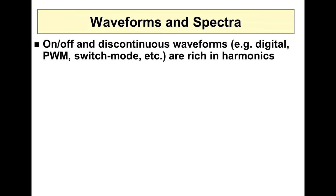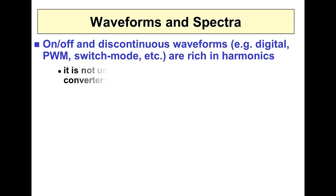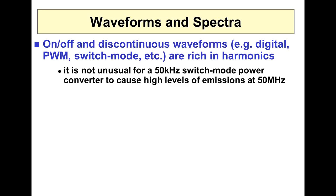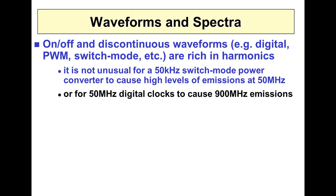When you do EMC, it helps if you get used to thinking of things as seen on an oscilloscope and also on a spectrum analyzer at the same time. Swapping between domains helps you understand what's going on. These days we're using an awful lot of discontinuous waveforms — like digital waveforms, switch mode power converters, and pulse width modulation. These waveforms, when analyzed on a spectrum analyzer, are very rich in harmonics. It's not unusual for 50 kHz switchers to give high emission levels at over 1,000 times the switching frequency — that's the 1,000th harmonic — or for 50 MHz digital clocks to cause emissions at more than 900 MHz.